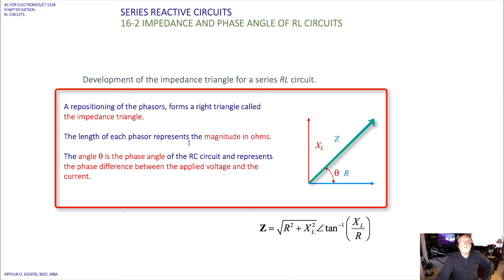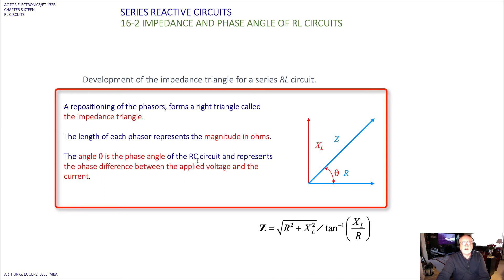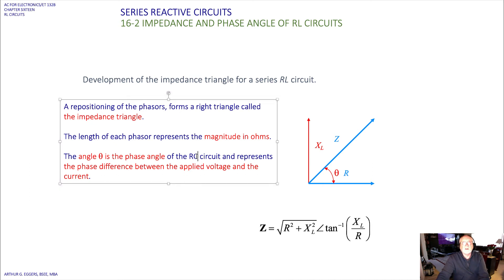The length of the phasor represents the magnitude in ohms — this vector length drawn to scale on graph paper gives the magnitude, and you find the angle between Z and R using the Pythagorean theorem. The angle theta is the phase angle of the RL circuit and represents the phase difference between the applied voltage and the current.